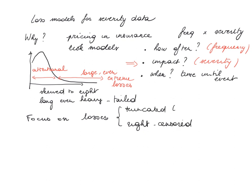If truncation is happening in an insurance context, we're typically going to focus on left truncation. Let us explain what these different phenomena are referring to. Let's start from censoring. When losses are censored, it means we see part of the loss but not the full loss.